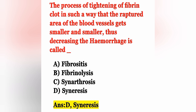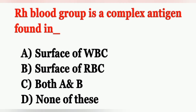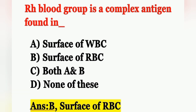Next question: RH blood group is a complex antigen found in — Option A: surface of WBC, Option B: surface of RBC, Option C: both A and B, Option D: none of these. RH blood group is a complex antigen found on the surface of RBC. Option B is the correct answer.